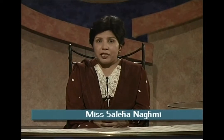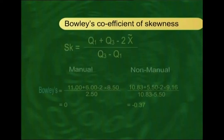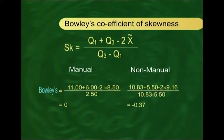So the distribution of ages of children of non-manual workers is negatively skewed. Computing Bowley's coefficient of skewness for both datasets: for the children of manual workers it comes out to be 0, and for the children of non-manual workers it comes out to be −0.37. The negative answer confirms that the distribution of children of non-manual workers is indeed negatively skewed.